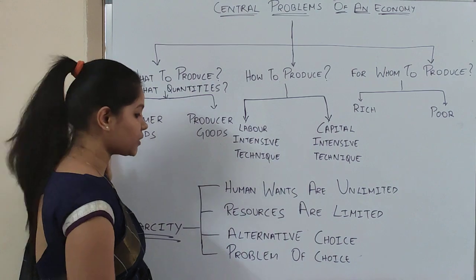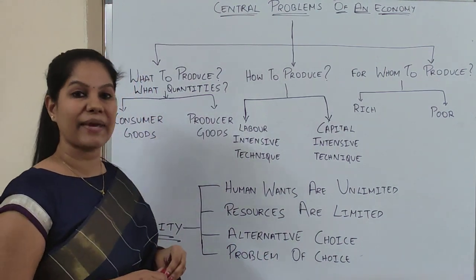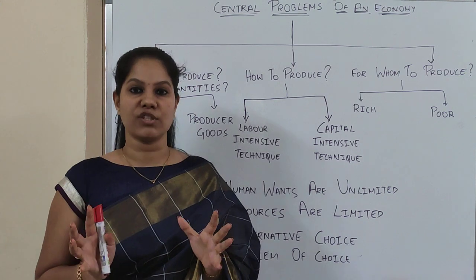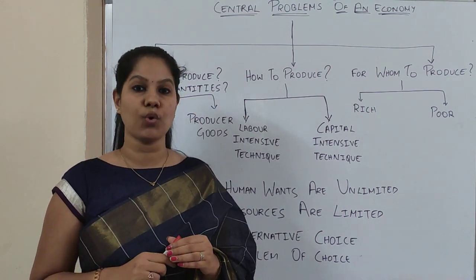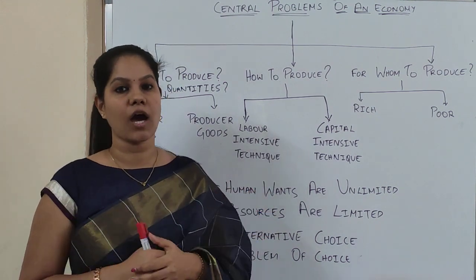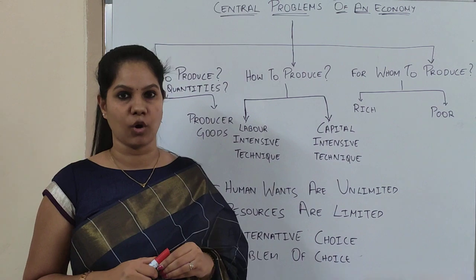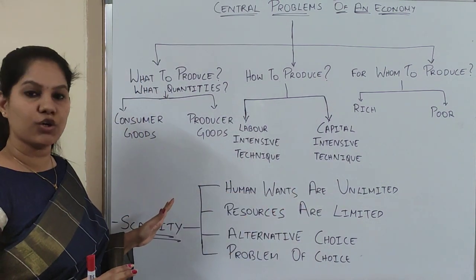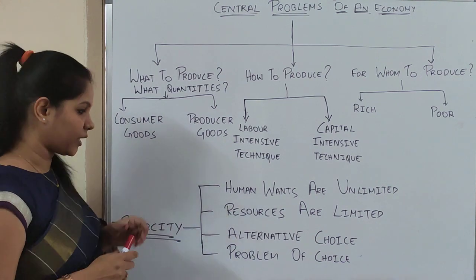The next point is the problem of choice. You have so many alternatives — picking which is the best one, which is good for the people, and in a cheaper way you can produce. You have to go with all these techniques. This is the way how production, consumption, any kind of activity in an economy runs. I have already briefed this in the previous videos, so I am not going to take much time on these topics.